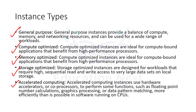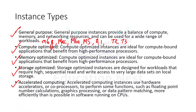Examples of general purpose instances include M6G, M6A, and M5. Anything starting with 'M', 'A' like A1, or 'T' falls under general purpose. The use case is when you want flexibility — a combination of CPU, memory, storage, and networking. Use cases include web servers and code repositories.